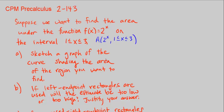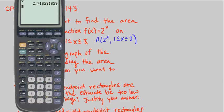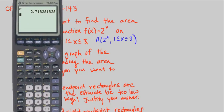Part A says sketch a graph of the curve shading the area of the region you want to find. So I'm going to take my calculator out, turn it on, and go ahead and put y equals, clear anything there, and y1 is equal to 2 to the power of x.